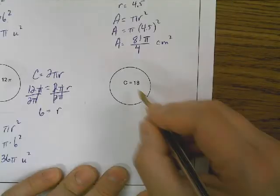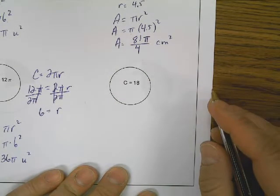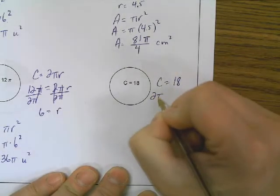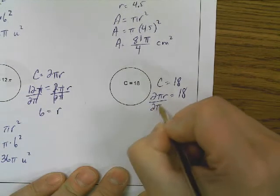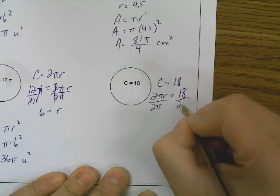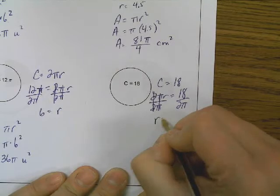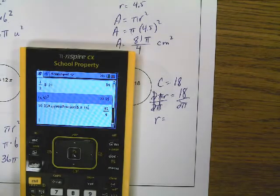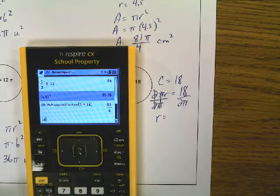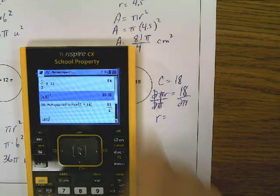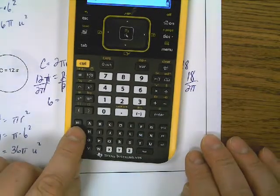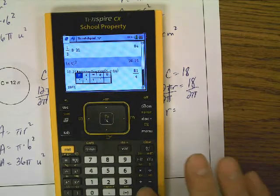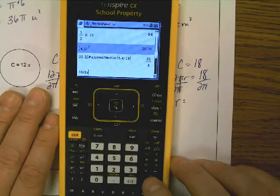That one worked out nicely because our circumference had a pi on it — it was 12 pi. Let's see what happens when we don't have that. We've got 18 here, no pi. You have to be careful not to try to make that work out — the radius of this will not be 9. So you write circumference is 18, so 2 pi r is 18, divide by 2 pi on both sides, and you get r equals 18 over 2 pi. We're going to put this into the calculator and get a decimal.